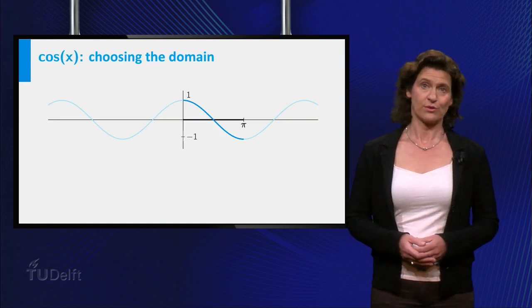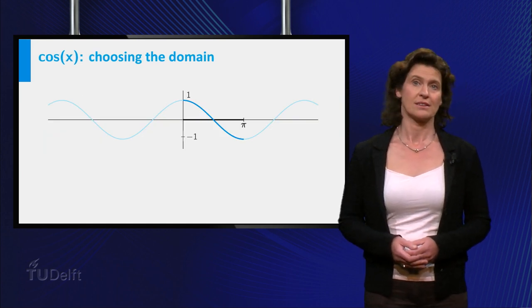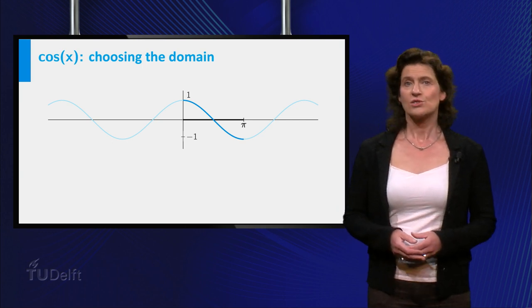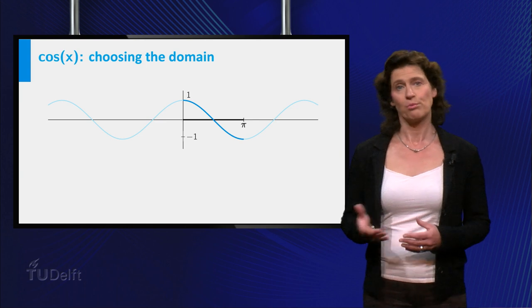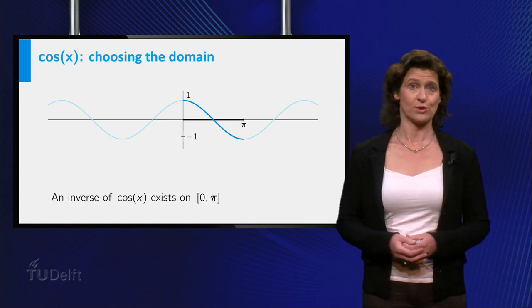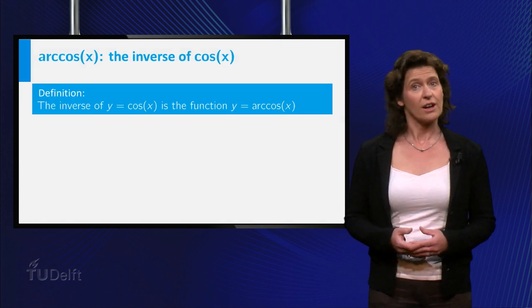Now let's look at another trigonometric function, the cosine of x. To define the inverse of the cosine of x, consider the interval from 0 to pi. On this interval, the cosine has an inverse. It is called the arcsine.